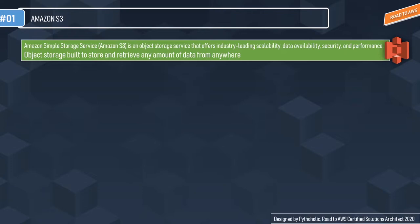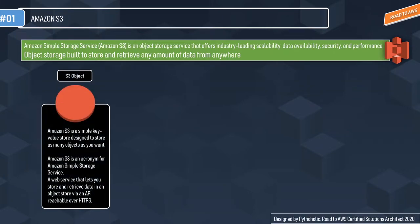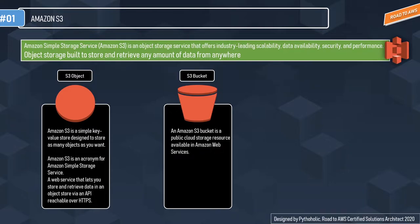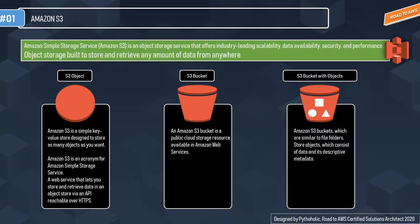There are three important things you should understand to master AWS S3. The first one is S3 Objects, the second is S3 Buckets, and the third is S3 Bucket with Objects. Let's start with S3 Objects. Amazon S3 is a simple key-value store designed to store as many objects as you want. All the objects you store will have a key which points to the data you want to retrieve. With a key-value pair, there cannot be duplicate keys — each unique key points to a specific value, just like in S3.